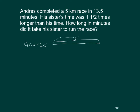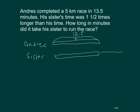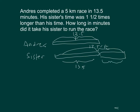Andres took 13.5 minutes. The sister took not only the 13.5, but the other half as well. So we need 13.5 times one and a half. The first part is 13.5, and the second part is 13.5 times one-half. Let's work that out.